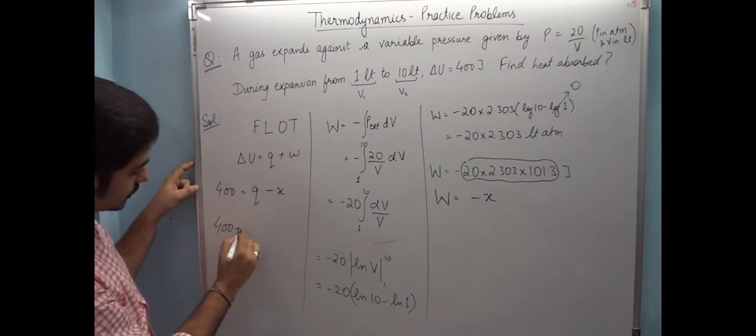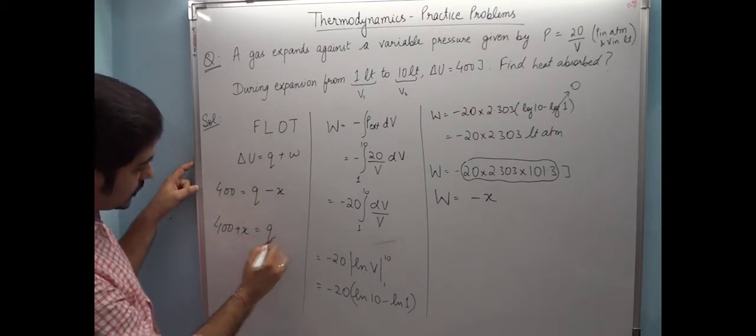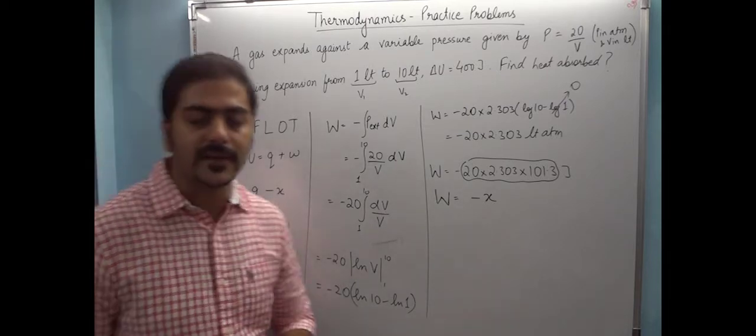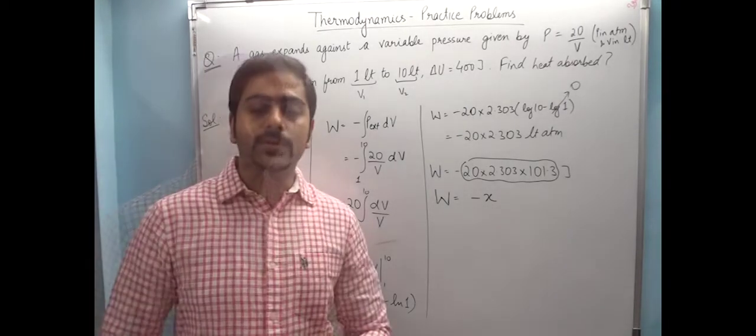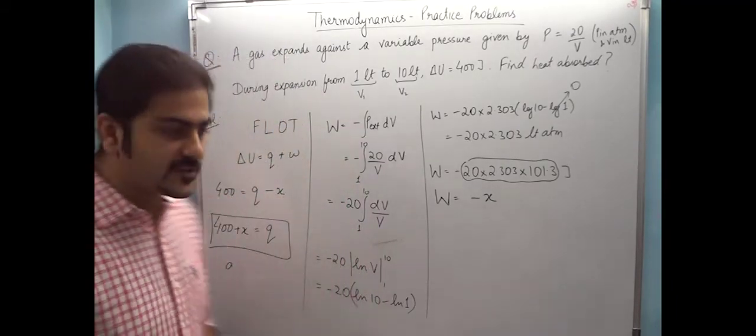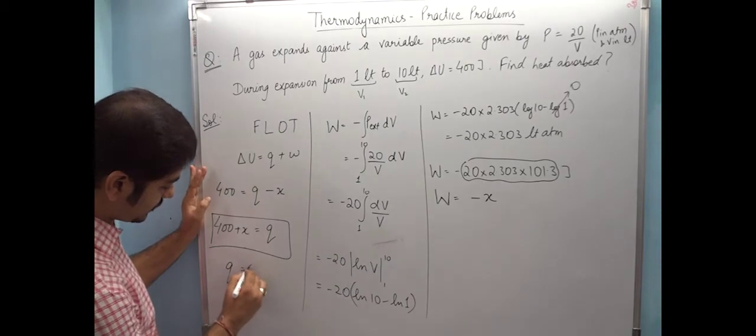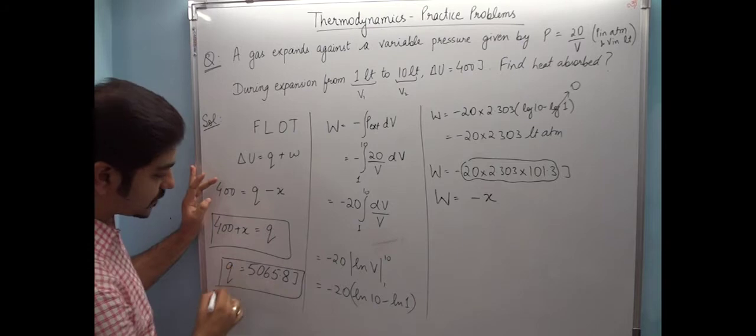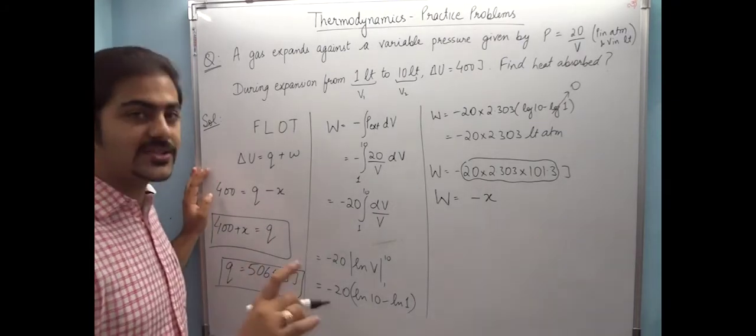So approximately, the answer will be around 5000. So the exact value of heat absorbed will be 5065.8. When you do this question with a calculator at home, this is the final answer to verify.